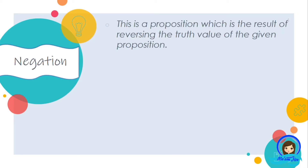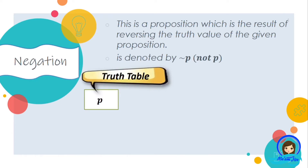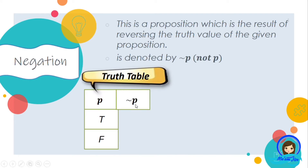Negation is a proposition which is the result of reversing the truth value of the given proposition. It is denoted by the symbol not P. For its truth table, we have the proposition P, which can be true or false. When we take the negation of this proposition — not P — when P is true, its negation is false, and when P is false, its negation is true.